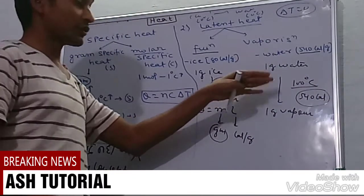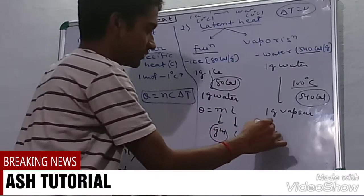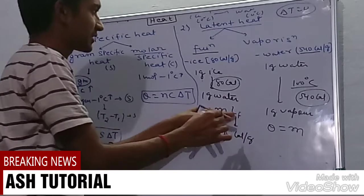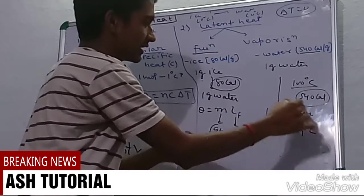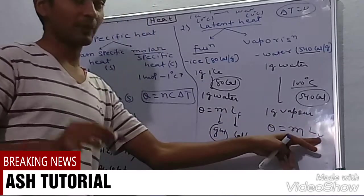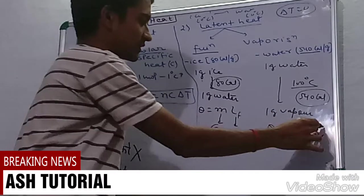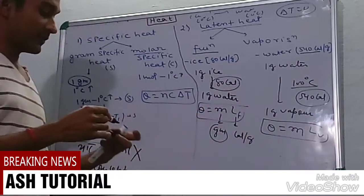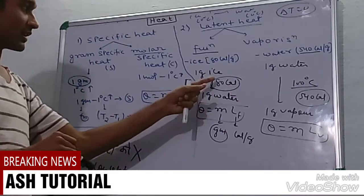So for conversion of m gram water you will need m into L. I write LF for latent heat of fusion and I will write LV for latent heat of vaporization.